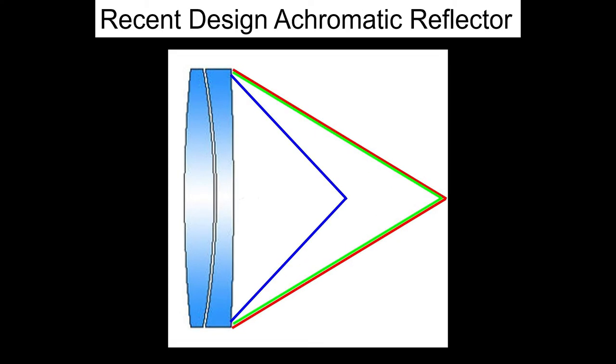More recent design achromats try to focus the red and green colors to the same point, sacrificing the blue part of the spectrum. This makes the blue and violet end of the spectrum very much out of focus, so a broad blue haze will surround the focused image. However, with little energy in this part of the spectrum, this in fact isn't necessarily very obvious visually, so an almost apo-like visual image can result.